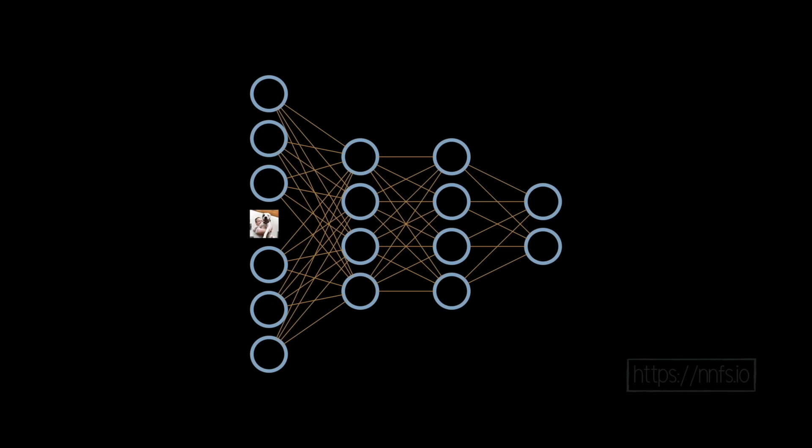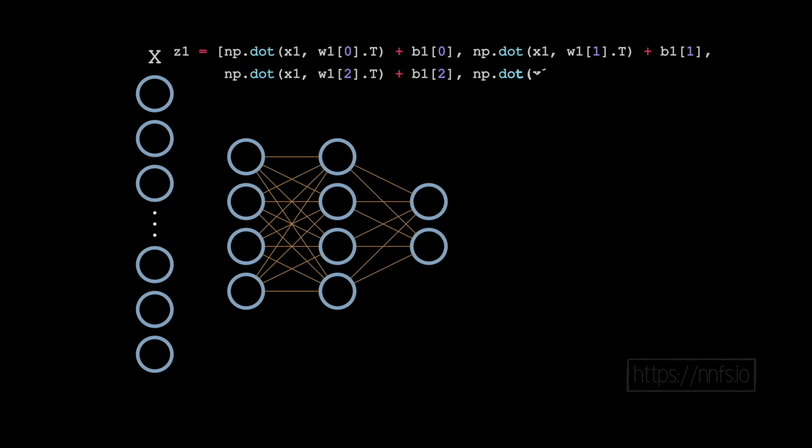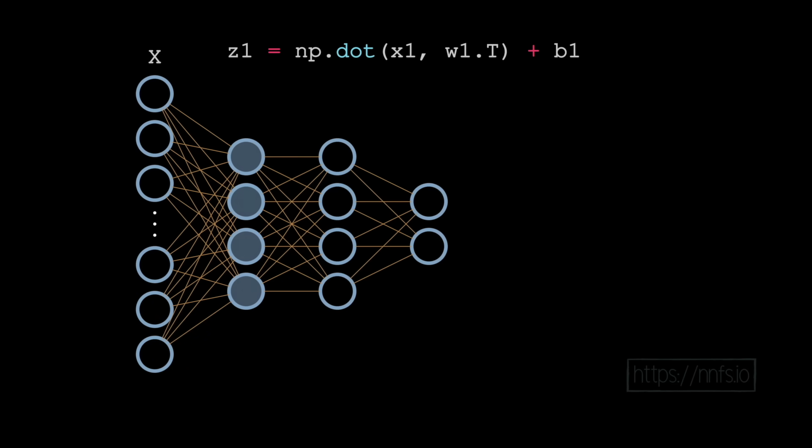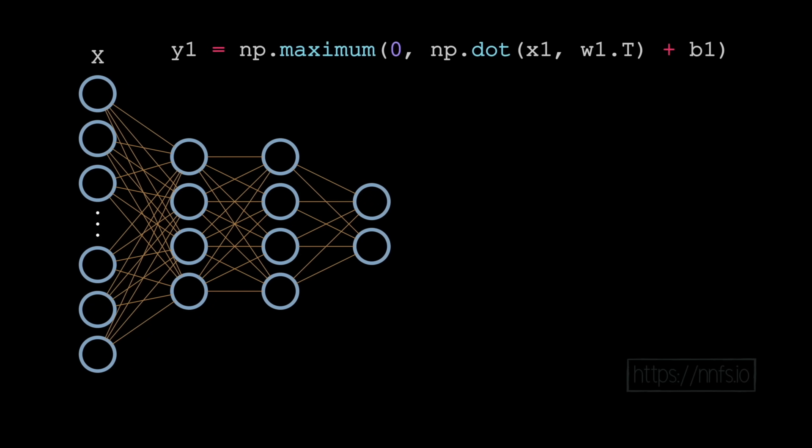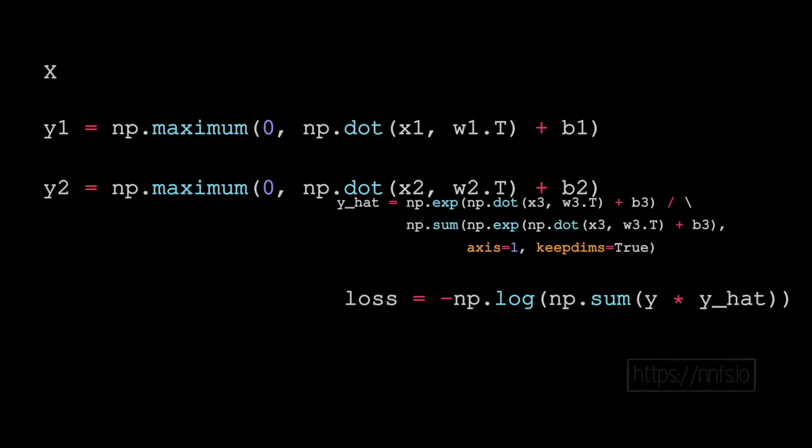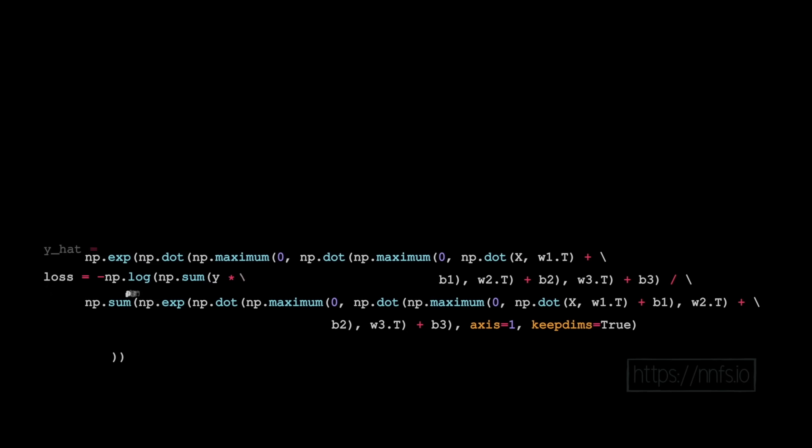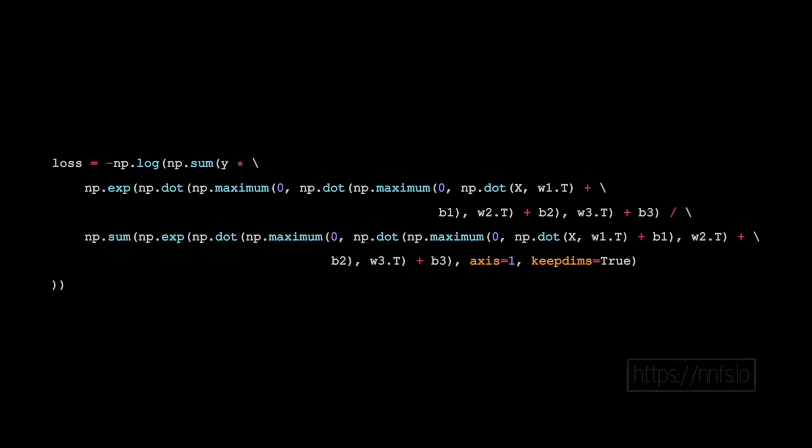Looking at the calculation for a neural network, you've got your input data and every unique input and every unique neuron - the information coming through has a unique weight associated with it. Those get summed together per neuron plus a bias, run through an activation function, and then we do that for every single layer giving us the output. From there we calculate a loss, which is a calculation of how wrong the neural network is. At the end of that, even though that was just the forward pass, that looks extremely daunting.